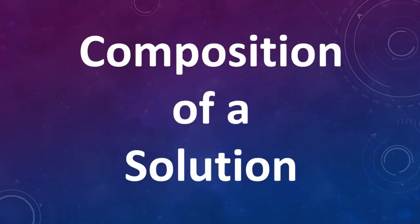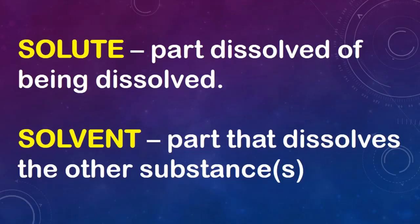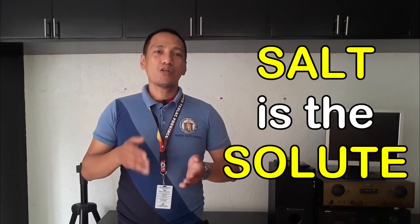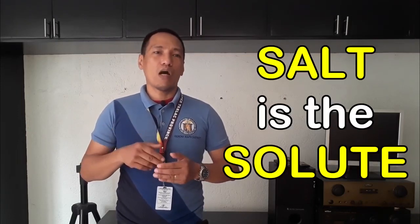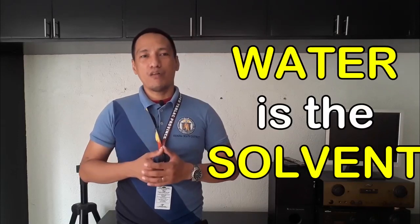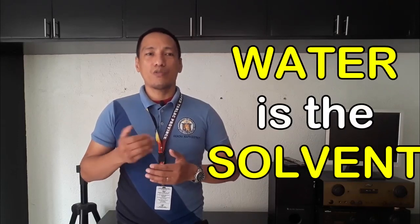Composition of a solution — there are two parts in a solution: the solute and the solvent. Solute is the part being dissolved in a solution, ito yung part na tinunaw sa solution. While solvent is the part that dissolves the substance in a solution, or ito yung ginamit mong pangtunaw. Example: nagtunaw ka ng salt o asin sa isang baso ng tubig. Yung salt ang solute kasi ito yung tinunaw, habang yung water naman ang solvent kasi ito yung nang tunaw.